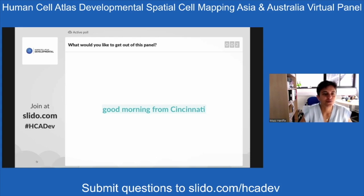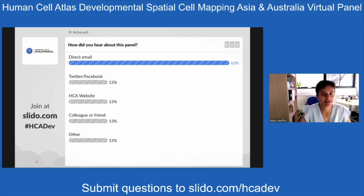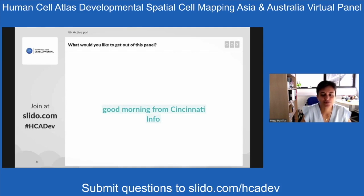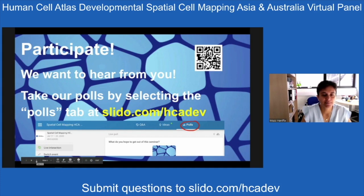The first answer about what you'd like to get out of this panel included 'good morning from Cincinnati.' The next question was how you heard about this panel — the vast majority, 63%, responded direct email, which has now gone to 67%, with about 10-11% for social media and the HCA website. So direct mail is the most effective way of reaching out.